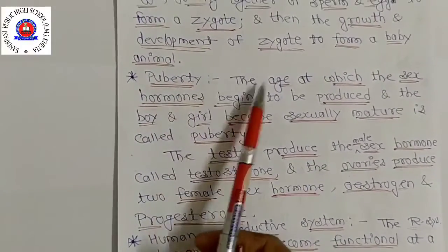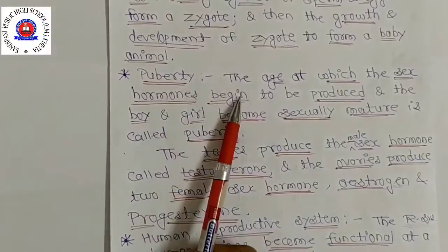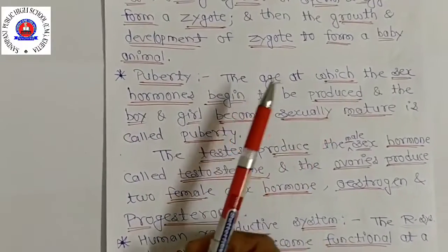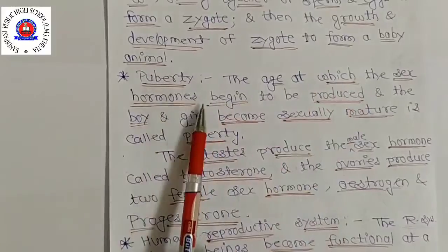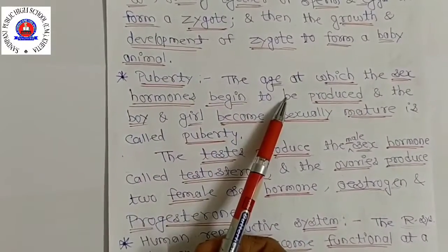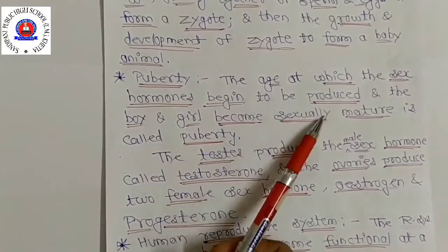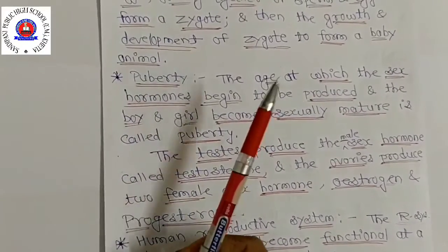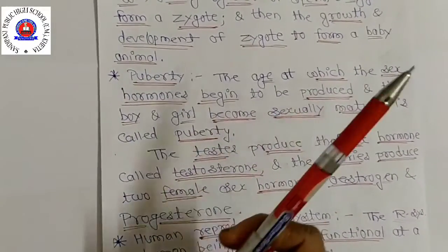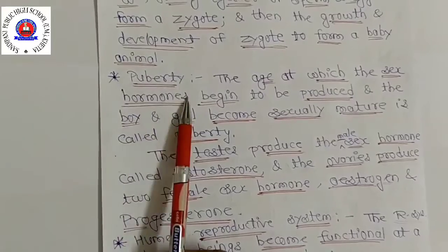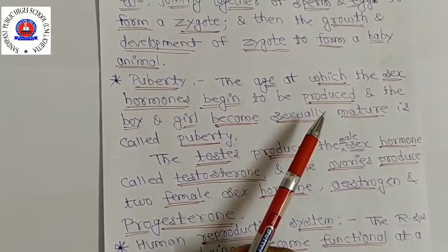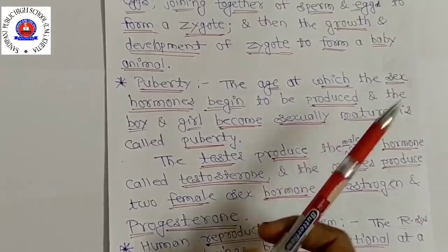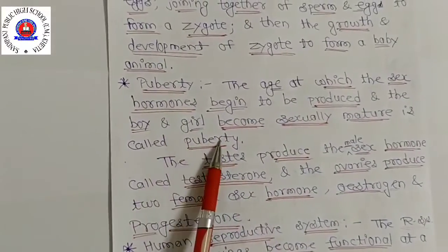Puberty is the age at which sex hormones begin to be produced and the boy and girl become sexually mature — that is, able to reproduce. Puberty tends to start earlier in females than in males. Generally, boys attain puberty at the age of 13 to 14 years, while girls reach puberty at a comparatively lower age of 10 to 12 years.